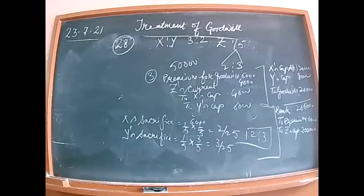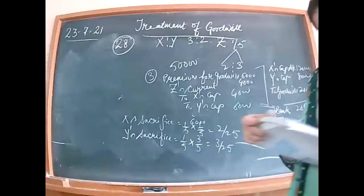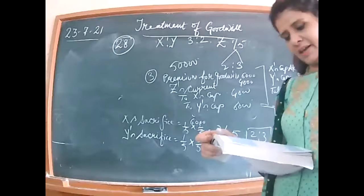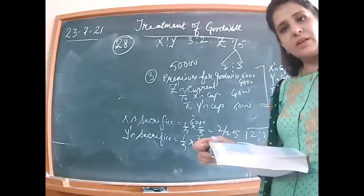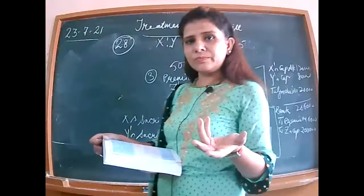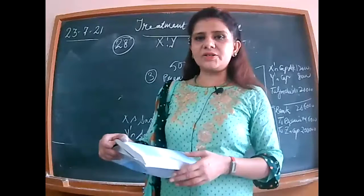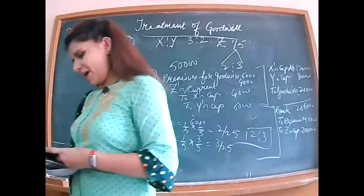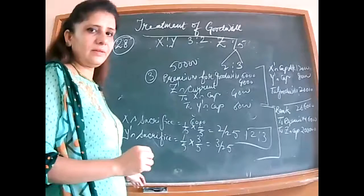Section 6 point P covers the treatment of goodwill at admission. When the new partner does not bring his share of goodwill in full, we debit his current account and credit the sacrificing partners' capital accounts. Moving on to illustration 29.